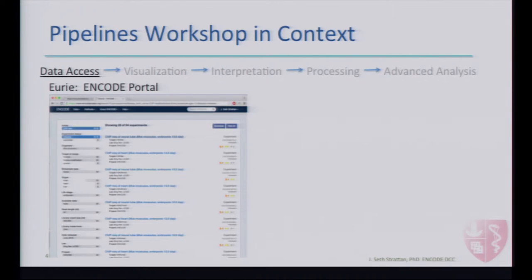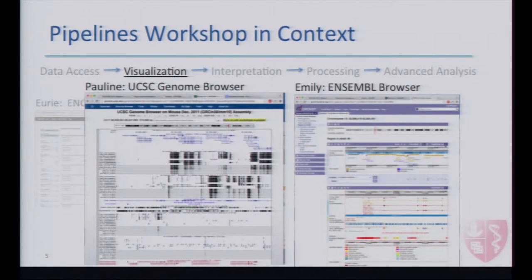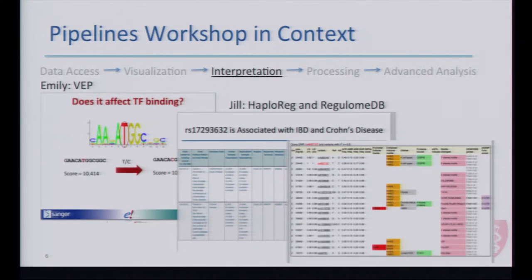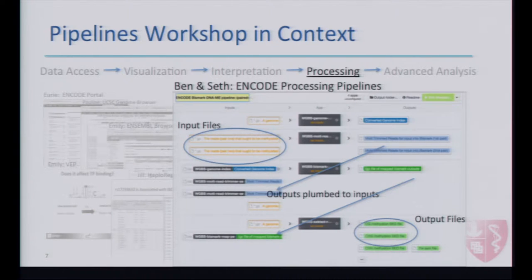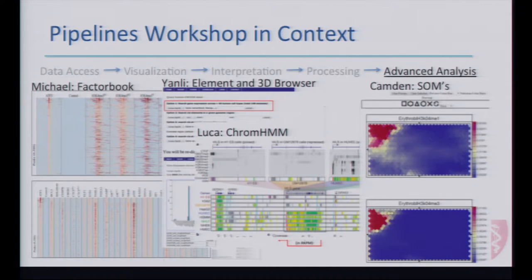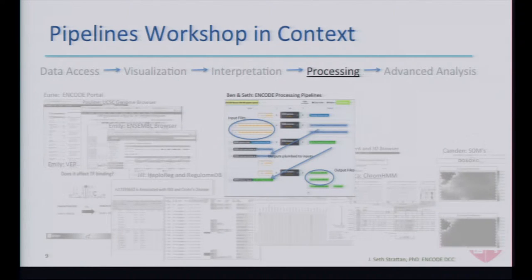I've been writing pipeline code for several months and so everything looks like a pipeline to me now. You're actually in a pipeline, and I'm going to put this workshop in the context of a pipeline through this meeting. Yesterday, Yuri showed you the ENCODE portal, which is really a way to access ENCODE data. Then Pauline and Emily showed you the UCSC Genome Browser and the Ensemble Browser — once you've accessed ENCODE data, how do you visualize it? And Emily and Jill showed you some tools for actually interpreting ENCODE data. Right now, Ben and I are going to talk about how the processed data are actually generated through these processing pipelines.